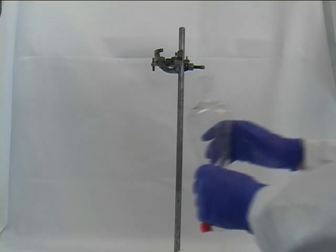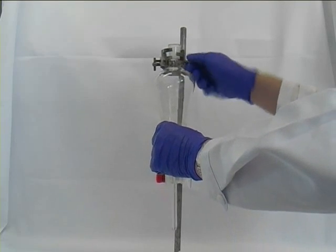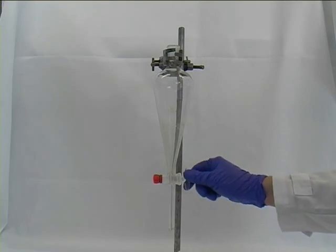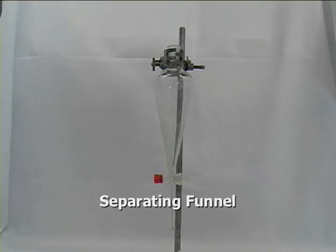First thing is to clamp the separatory funnel firmly into a retort stand and make sure that the tap at the bottom is closed in order not to lose any solvent.